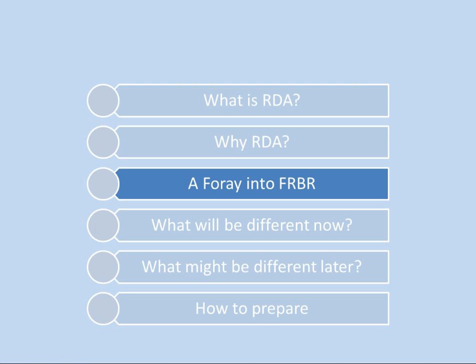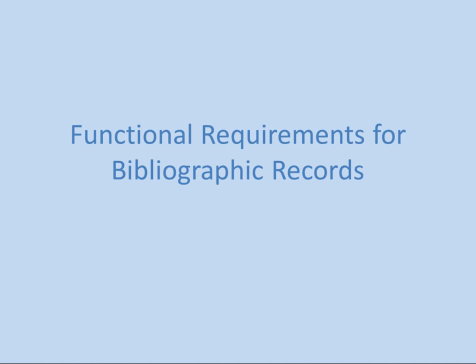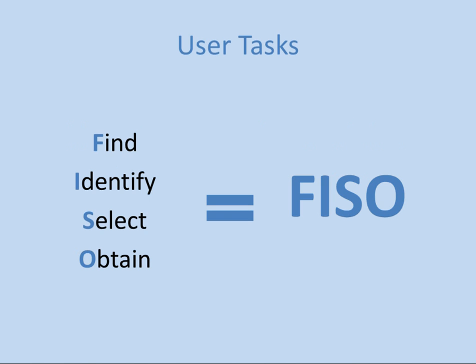At this point we're going to take a step and talk about a conceptual model called FRBR — most people pronounce the acronym as Ferber, though you'll hear FRBR sometimes. It stands for Functional Requirements for Bibliographic Records. Basically, it's a conceptual way of thinking about how users of our library catalogs interact with those catalogs, what they want to be able to do, and how we can think about the items that are in our catalogs. One important part of FRBR is that it's based on user tasks — the four user tasks are Find, Identify, Select, and Obtain.